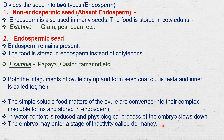Seeds become mature and then germinate. It is also known that the smallest and lightest seeds in the plant kingdom are found in orchids, and the largest and heaviest seeds are those of the double coconut.